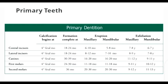The graph for primary teeth shows that calcification of both maxillary and mandibular teeth starts at the fourth fetal month. The first teeth to erupt are the mandibular central incisors, followed by maxillary central teeth and then the lateral incisors, with eruption ranging from five to twelve months. For canines, first and second primary molars, eruption occurs at 16–20 months, 11–18 months, and 20–30 months respectively.